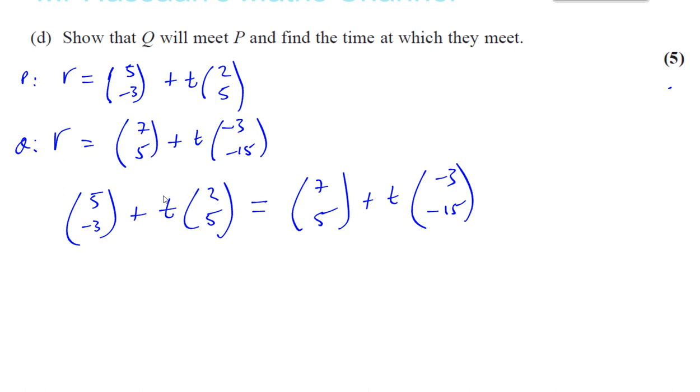So if I have 5 and minus 3 plus T times 2 to 5 and I find out if that's going to be equal to 7, 5 plus T times minus 3 minus 15. If I make an equation, 5 plus 2T equals 7 minus 3T. If I solve that equation, I'm going to have 5T is equal to 7 minus 5, which is 2. So that means T is equal to 2 fifths, which is 0.4.